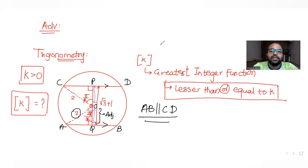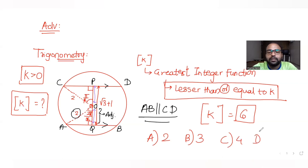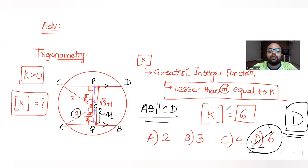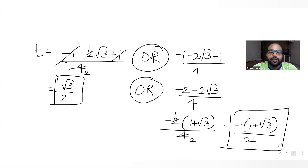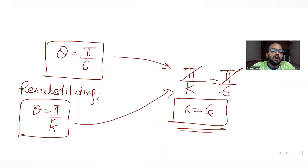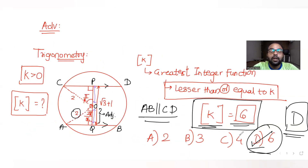We were asked to find the greatest integer function [k]. We found k = 6, and the greatest integer less than or equal to 6 is 6. The four options were A: 2, B: 3, C: 4, D: 6. The correct answer is D: 6.